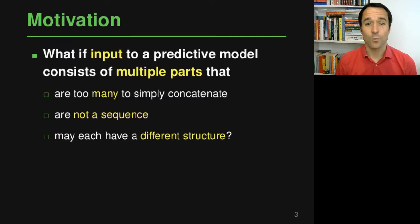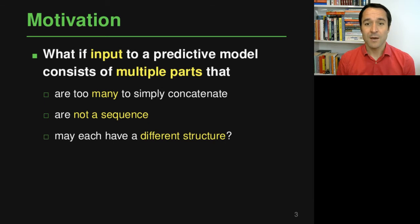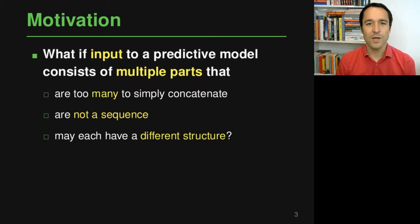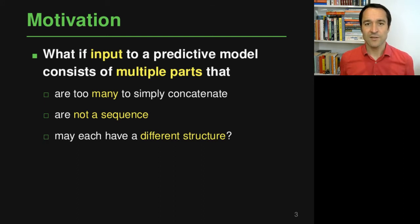Let's start with the motivation. Why do you want to use hierarchical neural networks? They are basically useful if you have an input on which you want to make some predictions and this input is structured into multiple parts. These hierarchical neural networks are particularly useful if these multiple parts are too many to simply concatenate — feeding everything into one big feed forward neural network would be very slow. Also, they are not just a sequence (in which case you could use the recurrent neural networks from the previous module), and each part may have a different structure requiring a different kind of neural network.